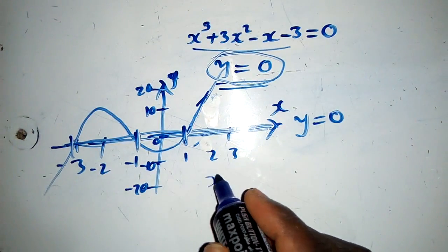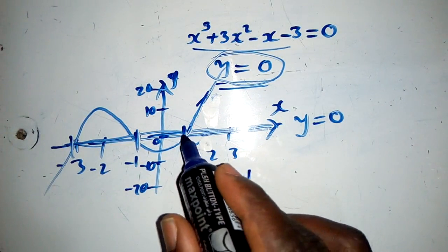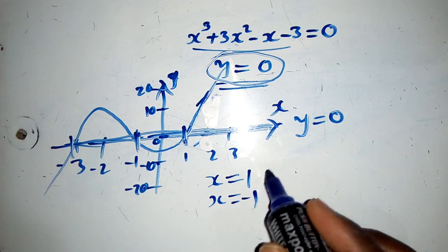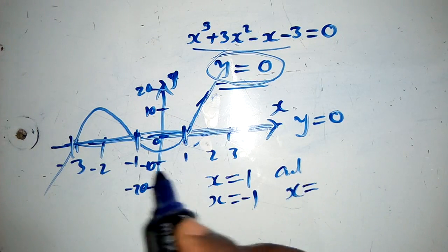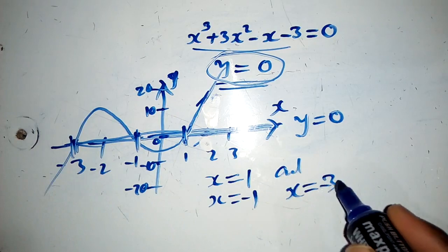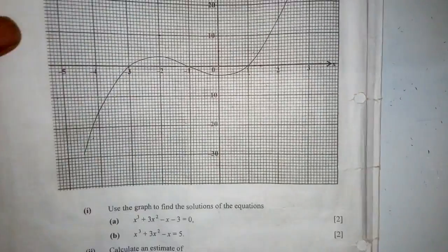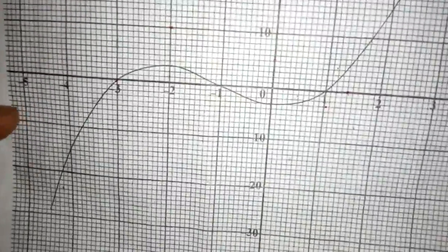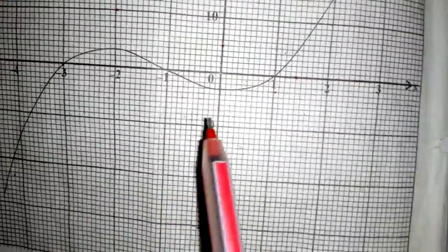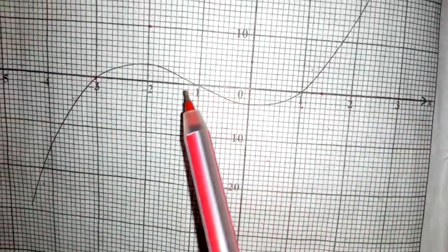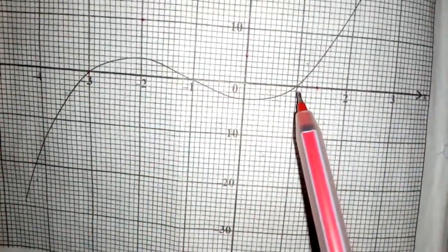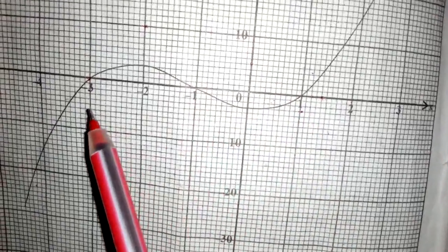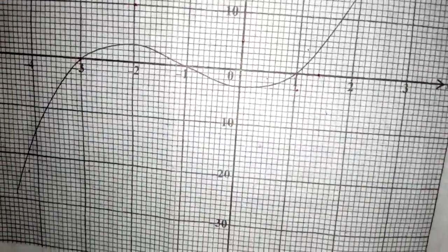The curve cuts on three points, and all these points are solutions to this equation. It cuts on x equals 1 here, x equals negative 1 over here, and x equals negative 3 over here. So these are the three solutions.